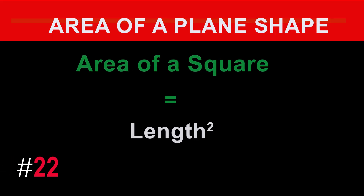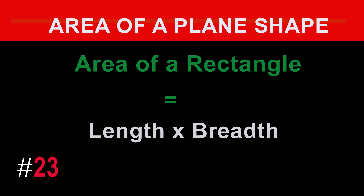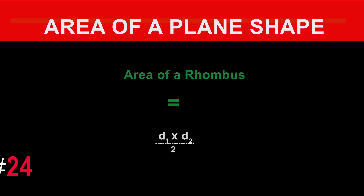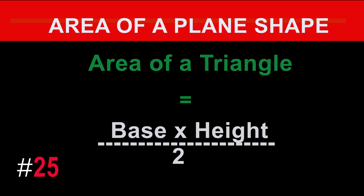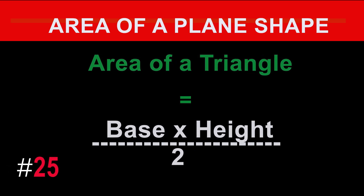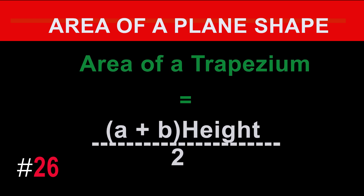The formula for the area of a square is: area equals length squared. The formula for the area of a rectangle is: area equals length times breadth. The formula for the area of a rhombus is: area equals d1 times d2 divided by 2. The formula for the area of a triangle is: area equals base times height divided by 2. The formula for the area of a trapezium is: area equals (a plus b) times height divided by 2.